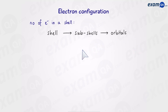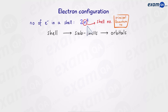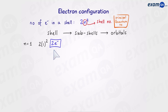The next step to electron configuration is to work out how many electrons are in a shell. We use the formula 2n², where n represents the shell number. Another word for the shell number is the principal quantum number — so if you see that term, all it means is shell number. When n equals 1, we have 2 × 1² which is 2 electrons, so the first shell holds 2 electrons.